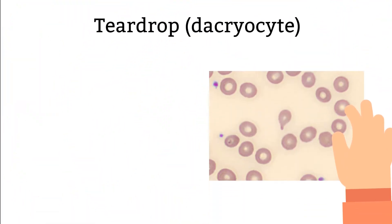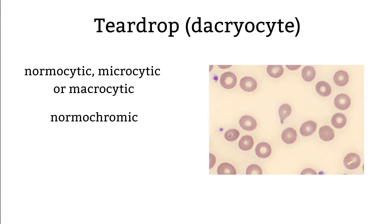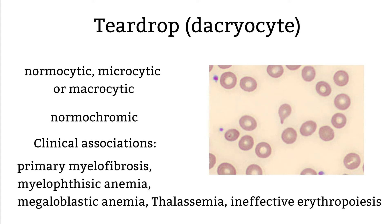Teardrop. Teardrop red blood cells come in various sizes — they could be normocytic, microcytic, or macrocytic. They usually have normal hemoglobin or are normochromic, but the distribution is a bit different; the hemoglobin is more concentrated at the tip. People also refer to this teardrop shape as pear shape with a single elongated point. This type of morphology could be the result of red blood cells passing through the spleen. Here are some illnesses that you can see teardrop cells present in the blood smear.